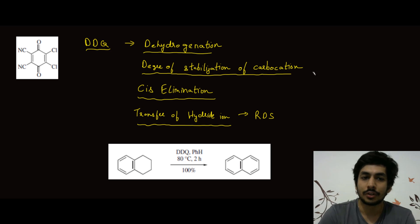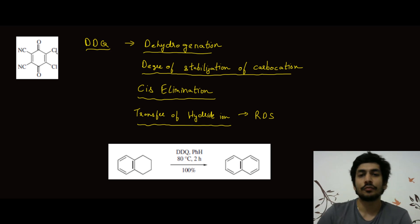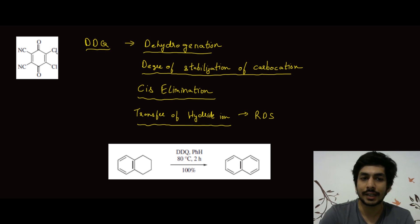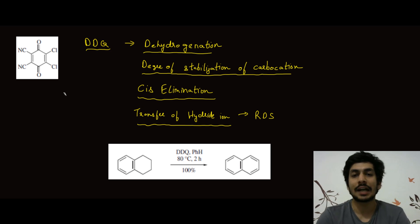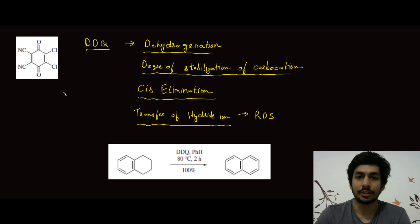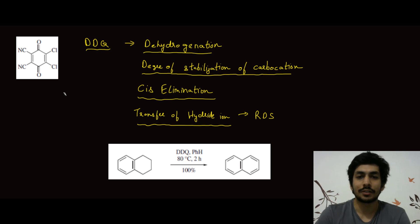DDQ is a very powerful oxidant. One important thing to know is that even in practical use, DDQ should be used in anhydrous conditions, because if it reacts with water it produces hydrogen cyanide gas, which is very lethal and toxic. You cannot use wet conditions when doing reactions with DDQ. Reactions are always carried out in non-polar solvents like dioxane or benzene.